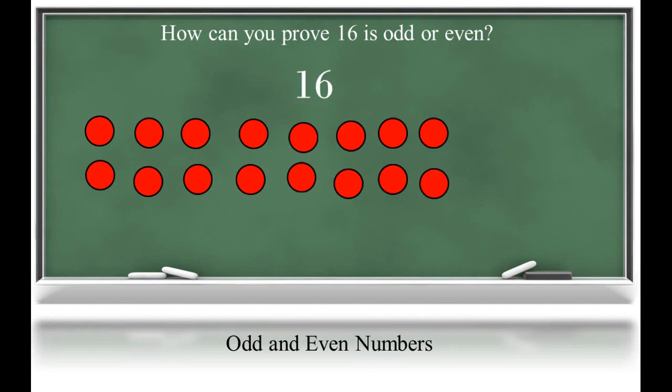Had the number been 16, each object would have a partner object forming 8 pairs, and so 16 is classified as even.